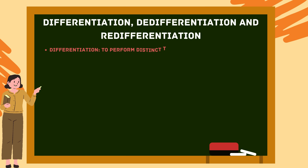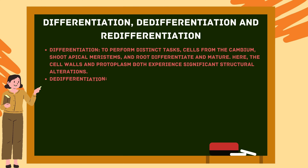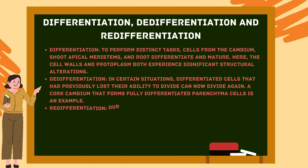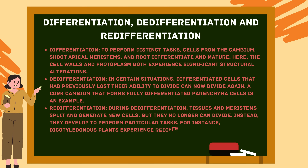Differentiation, de-differentiation, and re-differentiation: Differentiation — cells from the cambium, shoot apical meristems, and root differentiate and mature to perform distinct tasks, with significant structural alterations to cell walls and protoplasm. De-differentiation — in certain situations, differentiated cells that had previously lost their ability to divide can divide again; for example, cork cambium forming from fully differentiated parenchyma cells. Re-differentiation — during de-differentiation, tissues and meristems split and generate new cells, but they no longer can divide; instead, they develop to perform particular tasks, as seen in woody tissues of dicotyledonous plants.